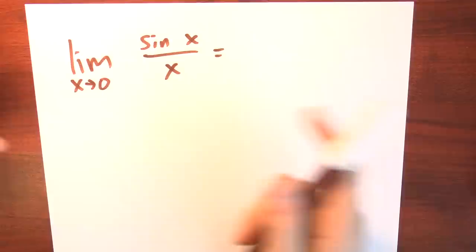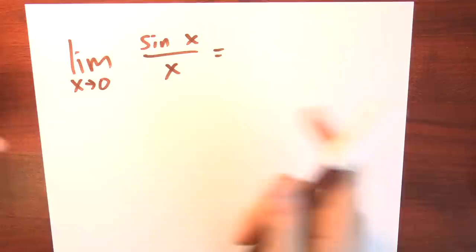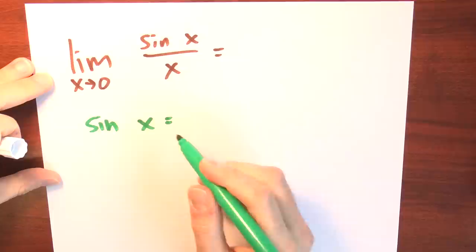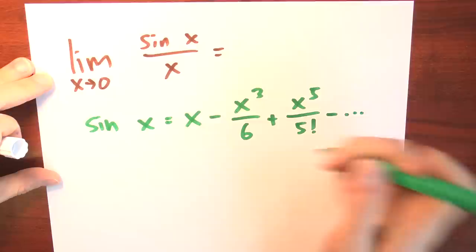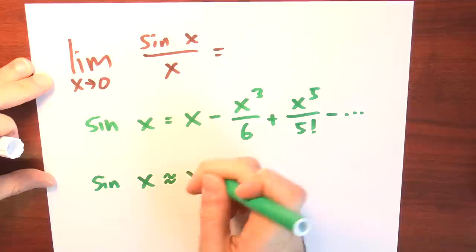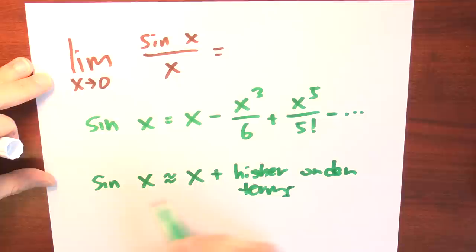One way to think about this is via Taylor series. Taylor series tells us that sine of x is equal to x minus x cubed over 6 plus x to the 5th over 5 factorial, and the series will keep on going. At least we know that sine of x is approximately x plus higher order terms.